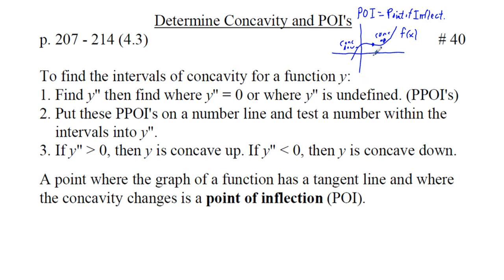Sometimes you just address the x-value where the point of inflection occurs. To find the intervals of concavity for a function y (sometimes written as f of x), find y double prime — analogous to f double prime — then find where y double prime equals zero or y double prime is undefined. These are PPOIs: possible or potential points of inflection. We put these PPOIs on a number line and test a number within the intervals into y double prime.